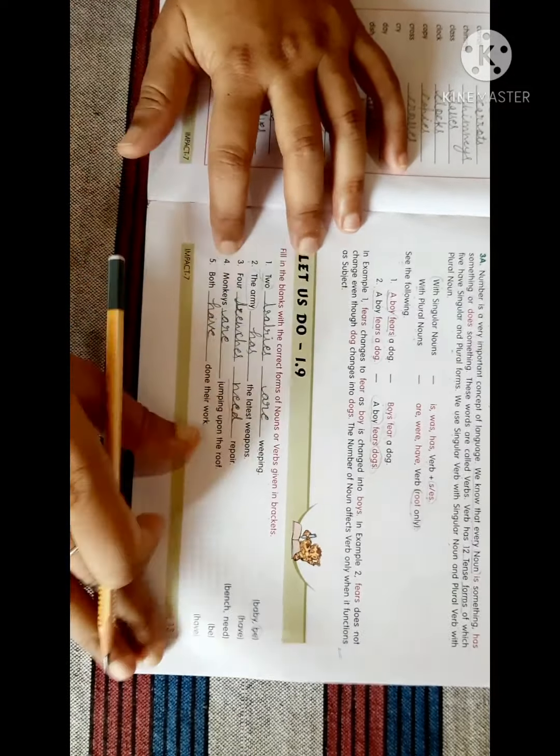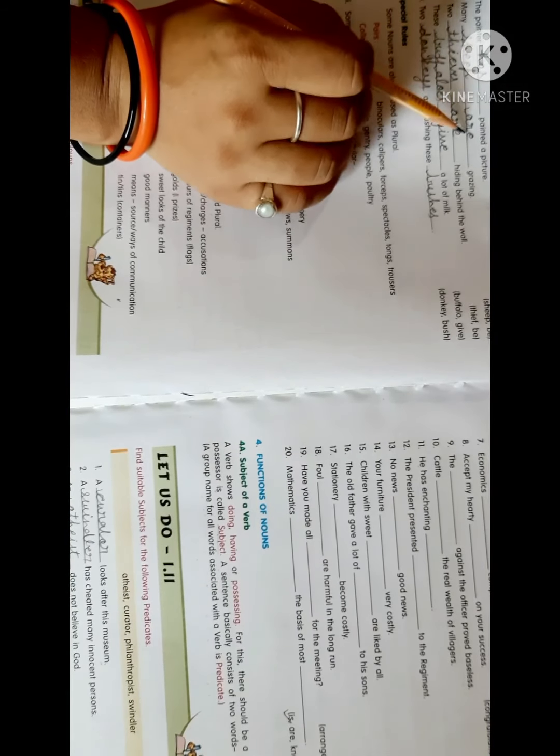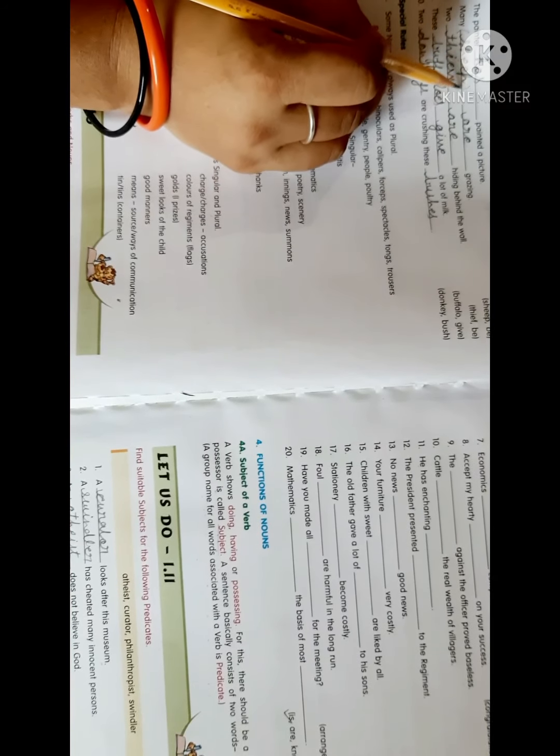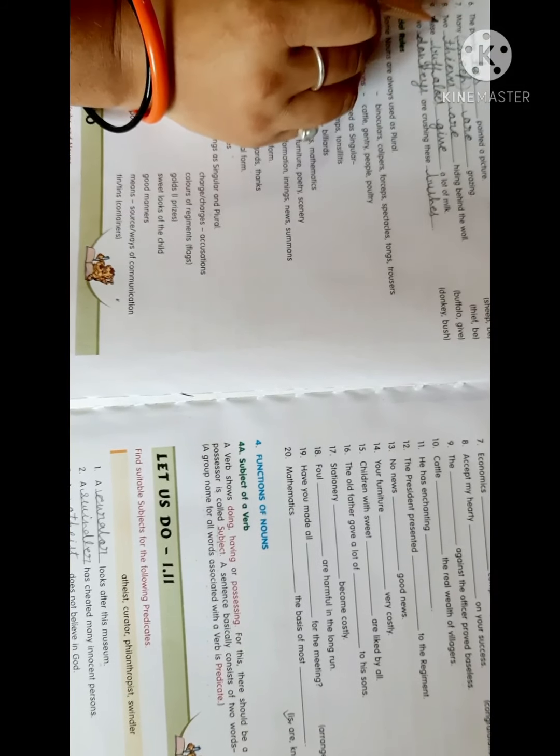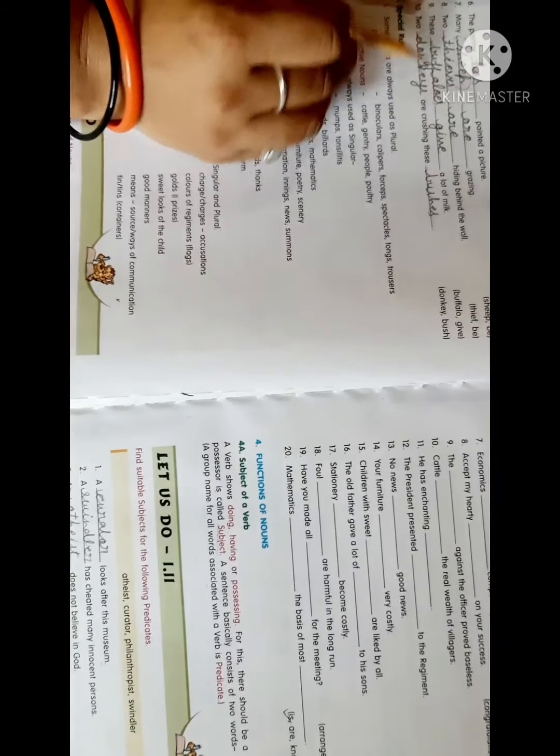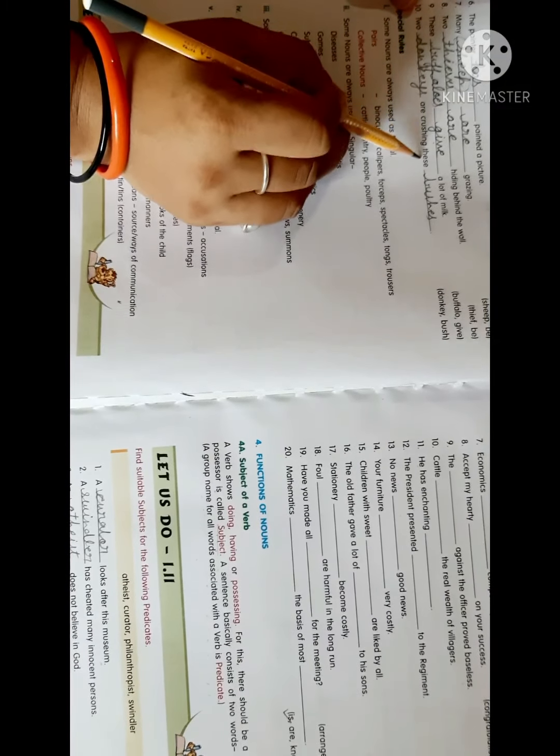The painter has painted a picture. Many sheep are grazing. Notice the singular and plural noun is same in the case of sheep. Two thieves are hiding behind the wall. These buffaloes give a lot of milk. Two donkeys are crushing these bushes.